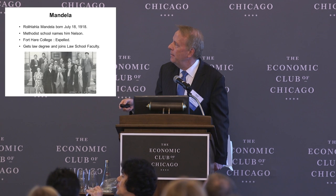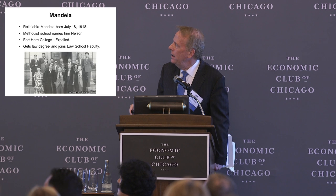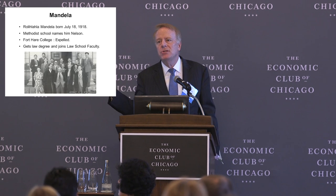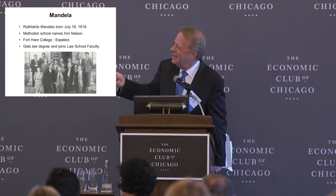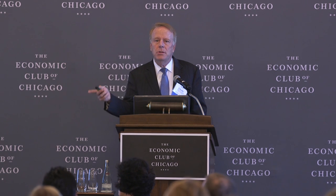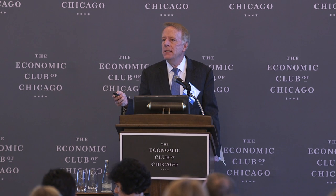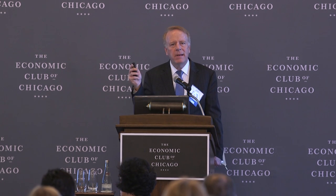His mother sent him to a Methodist school where the missionary named him Nelson. His father died relatively early when he was nine years old, and he was raised by the new head of the tribe. He went to Fort Hale College, which was an all-black student but all-white teacher college. He got involved in student politics and became a leader of the student government. There was a strike or disagreement — he wasn't willing to back down on a matter of principle — the principal wanted him to sign something saying he was wrong, and he wouldn't, so he was expelled.